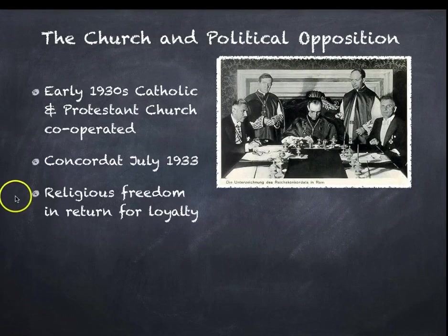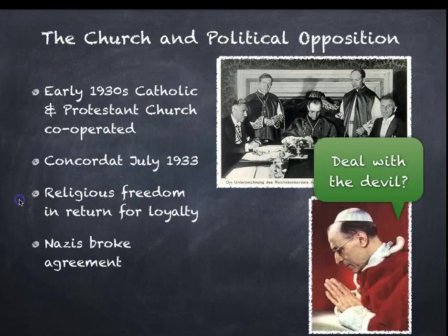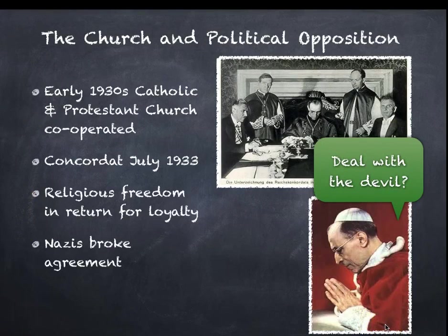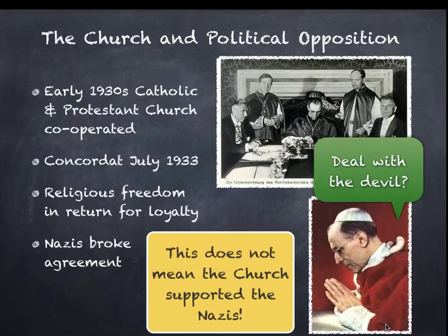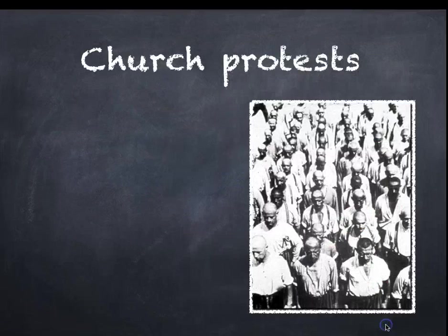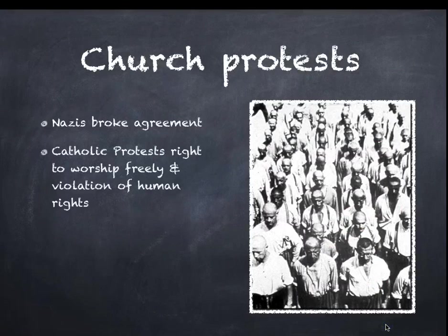The Concordat was supposed to guarantee religious freedom in return for loyalty, or at least non-criticism of the Nazi Party. But the Nazis went ahead and broke that agreement. You might ask why the Pope made a deal with Hitler. You have to remember this was at the beginning of the Nazi period, and the Pope was certainly not endorsing the horrors of the Holocaust and other things that were to follow. As the Nazi regime went on, many priests did protest and were subsequently put in concentration camps. The Church did not actively support the Nazis and their ideology.